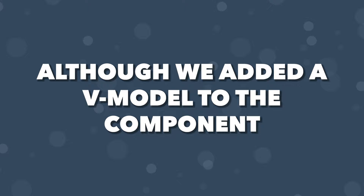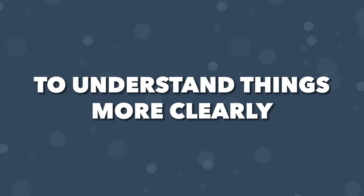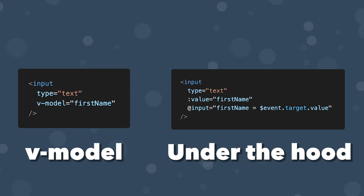Although we added the vModel directive to our component, our variable and our input that lives within the component are currently not synced together and we're not capturing any user input. To understand things more clearly, let's take a look under the hood of what vModel is doing. When this directive lives on an input directly, it binds a value attribute to whatever we pass into the vModel — in this case the firstName variable that we defined. It also listens for an event called input, which is fired when the input is updated, setting the firstName variable to the new value via event.target.value of our input.